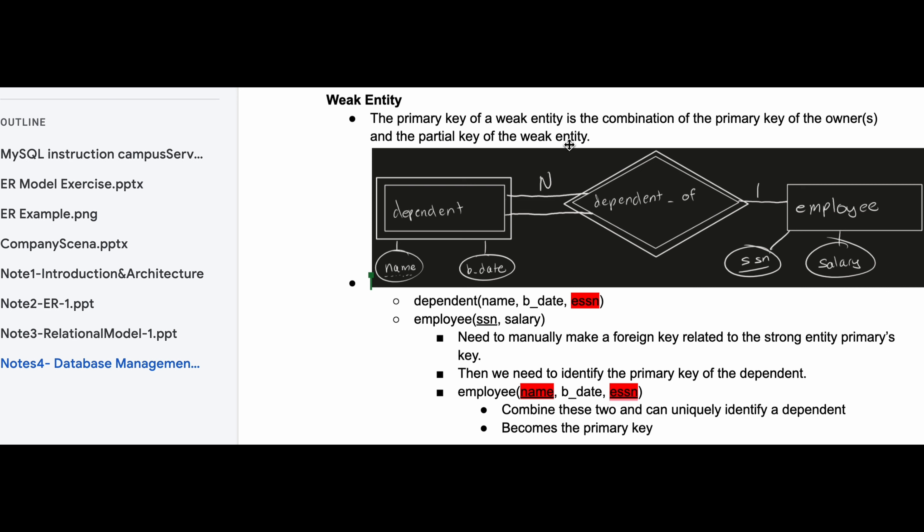So we have primary key and that is how we would look at our weak entity and how we would go about writing it. That's the important part right here.